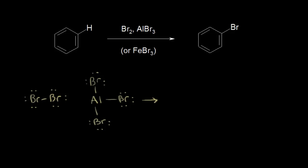In this video, we're going to look at the halogenation of benzene, and we'll start with bromination. Here's a benzene ring, and to it we're going to add some bromine. Our catalyst will be aluminum bromide (AlBr₃), though you could use FeBr₃ instead. The end result is substitution of a bromine atom for an aromatic proton on your ring.